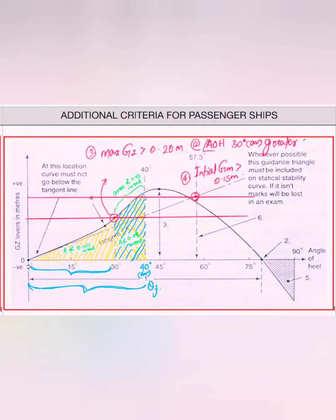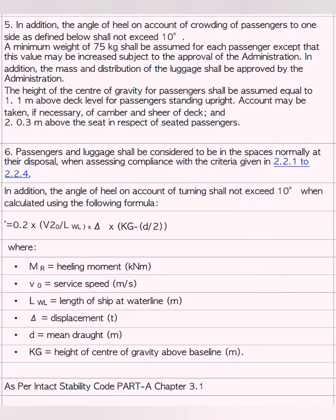These 4 points are the same for passenger ships, tankers, and other general ships. For passenger ships there are certain additional criteria: the angle of heel on account of crowding of passengers to one side shall be below 10 degrees, and the assumed weight of all passengers shall be 75 kg. The height of the centre of gravity for passengers shall be assumed equal to 1 meter above the deck level, and 0.3 meters above the seat for seated passengers. Passengers and luggage shall be considered to be in the spaces normally at their disposal when assessing compliance with the criteria. In addition, the angle of heel on account of turning shall not exceed 10 degrees when calculated by a certain formula.